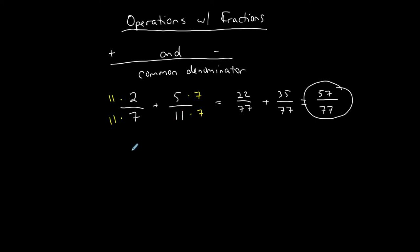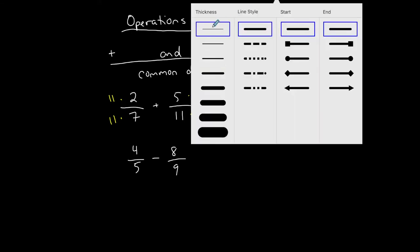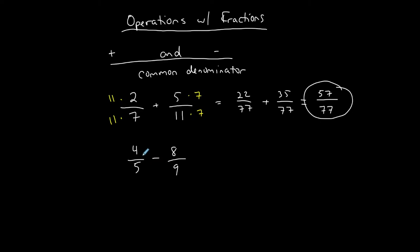Let me do an example with subtraction. Let's do four-fifths minus eight-ninths. Again, I have the subtraction of two fractions, and with addition and subtraction these are the ones that need the common denominator. So what do five and nine both go into? If there's not something simple I can think of, then I'm just going to say they both go into the product of each other — five times nine.